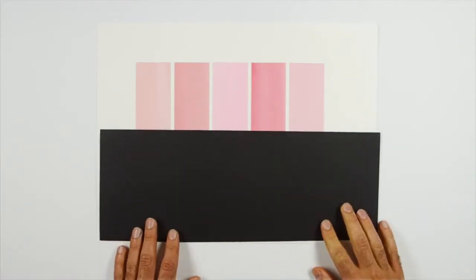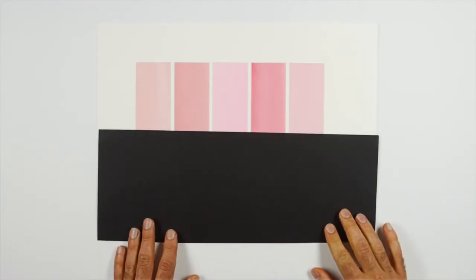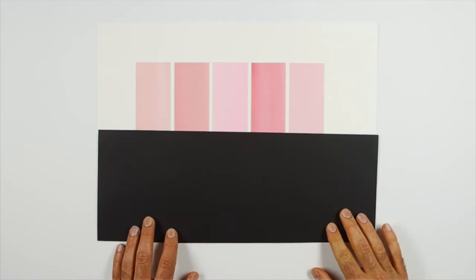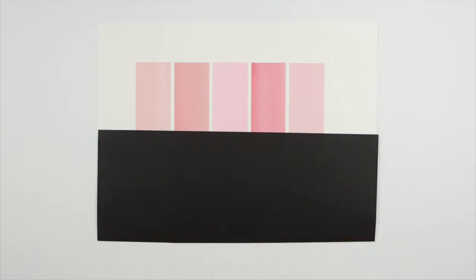To demonstrate the effect that 100 years of UV exposure and gallery conditions will have on each of these colors, I'm covering the bottom half of the swatches with black card. This is now going to be put into a lightfastness testing machine in the lab, and over the next 100 hours it will be exposed to the equivalent of 100 years of UV light.